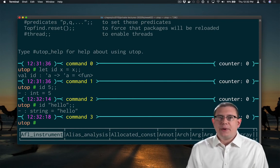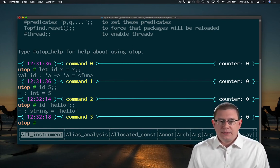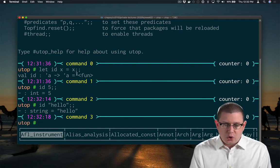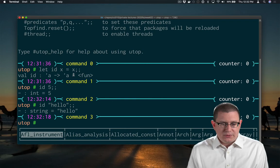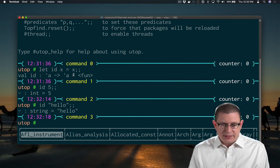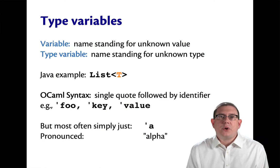Notice what the type of id is. It's a type that doesn't look the same as any of the other types we've looked at so far. It has this funny syntax in it, single quote a. This is actually the syntax for what's called a type variable in OCaml.